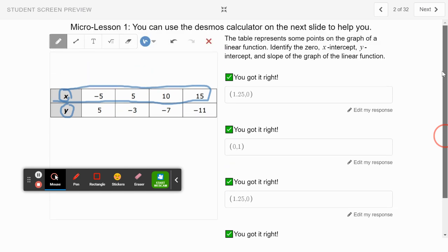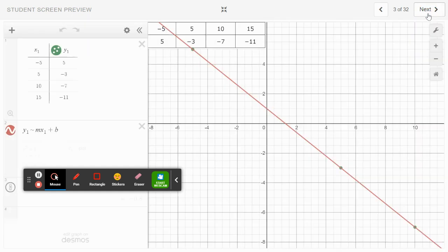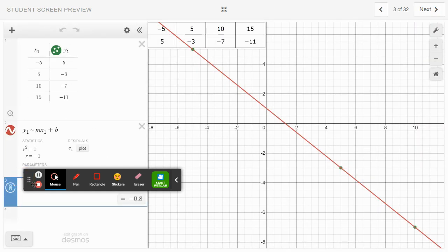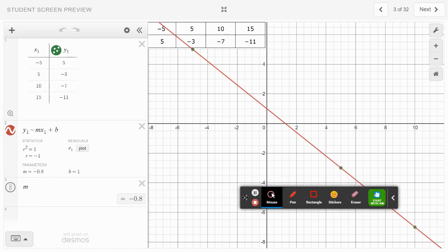What we simply did is we went to the next slide, put in our table, then used our equation to program Desmos to tell us what our values are. It tells us that m is equal to negative 0.8, and we can toggle between the decimal and fraction for the slope. Our b, which is our y-intercept, is shown here.